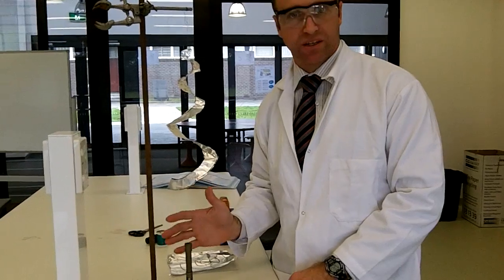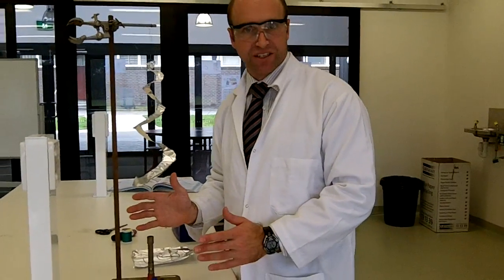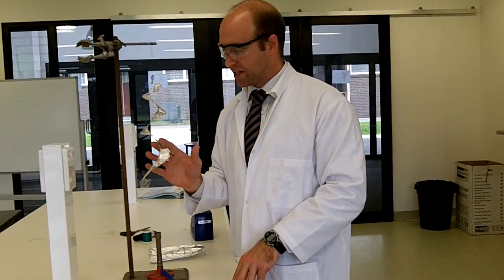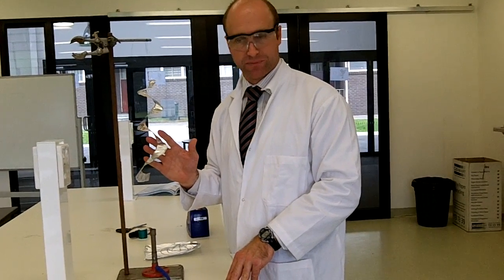And we're going to look at how heat can cause change. We're going to look at a convection current of the heat coming off the Bunsen burner causing a change on our spinning snake.